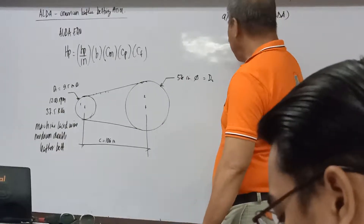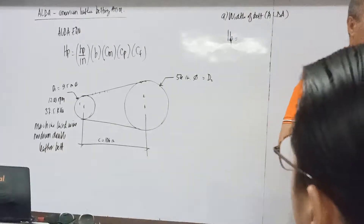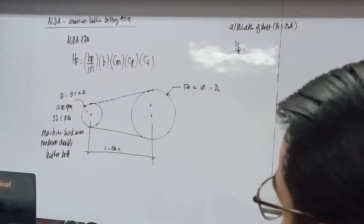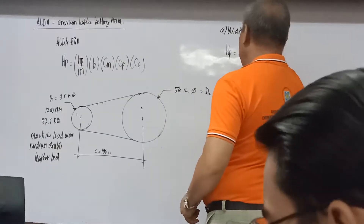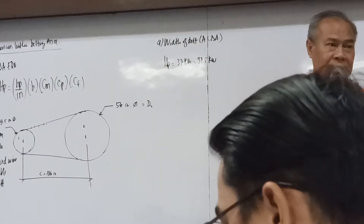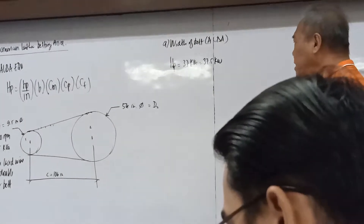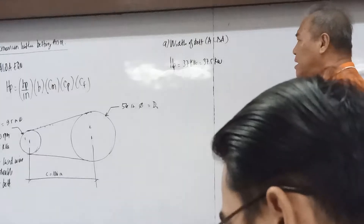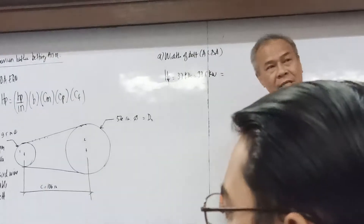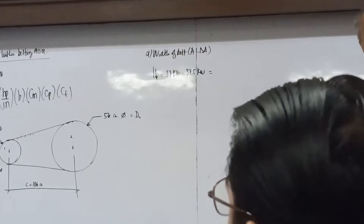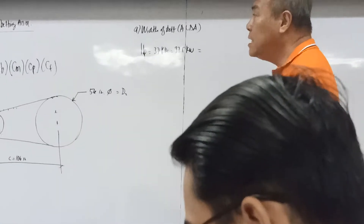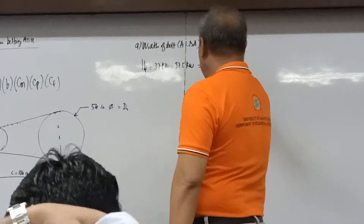37.5 kilowatts is approximately 50 horsepower. We divide by 0.746 kilowatts per horsepower to get the conversion. So the horsepower of the driving system is approximately 50 HP. Now, to find the horsepower per inch, we go to Table 17.1 of our textbook. First, we need to compute the belt speed.